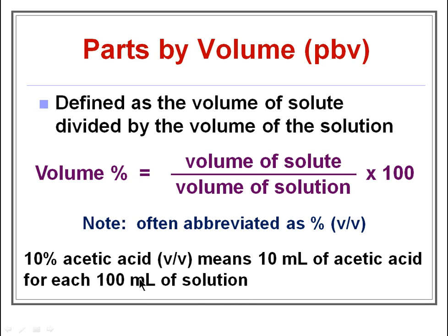So if you are taking 100 ml of 10% acetic acid solution, it means there will be 10 ml of acetic acid. We will see more examples of parts by volume in the next video.